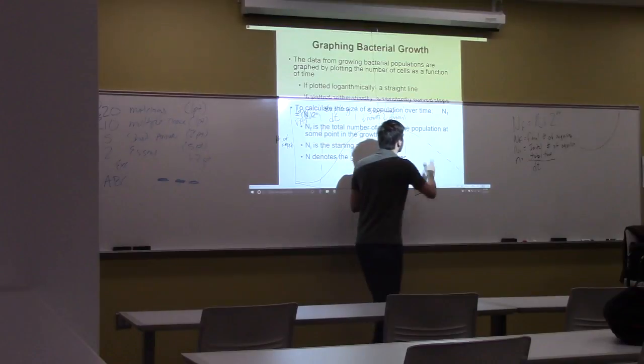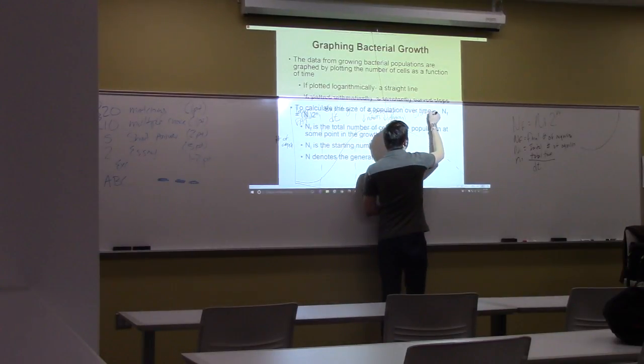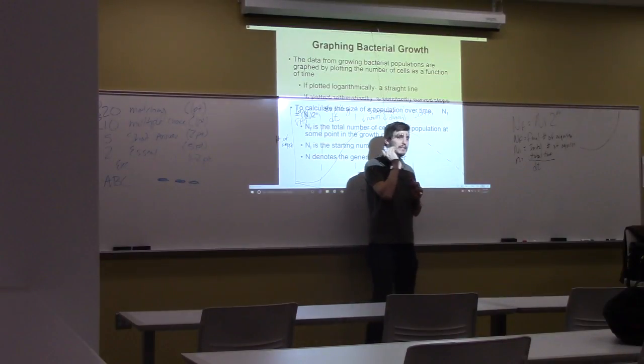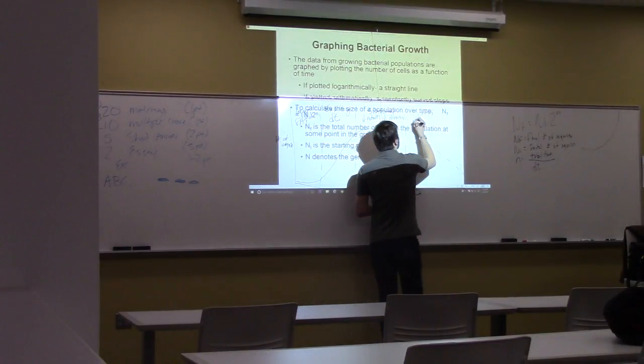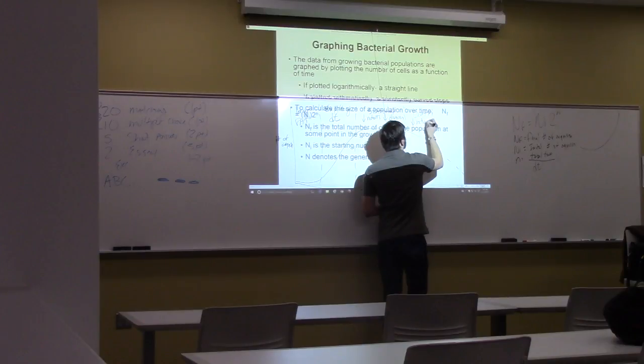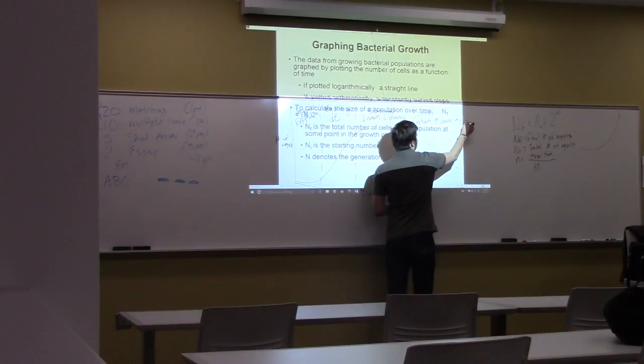And lastly, what's this curve called? Death. And what's happening here? They're dying because low nutrients, increased waste, which means increased death.